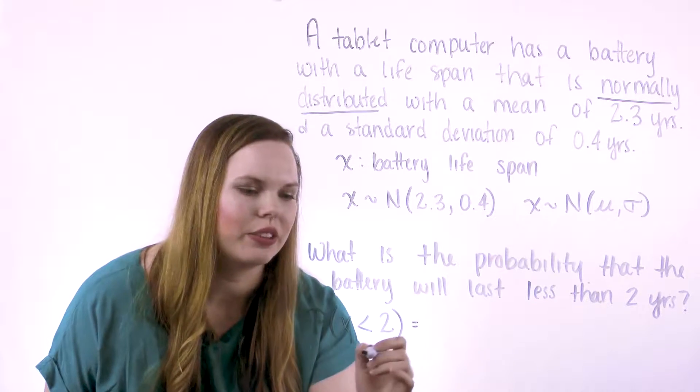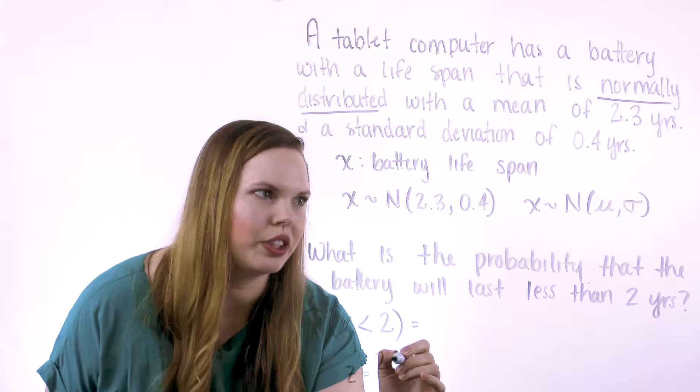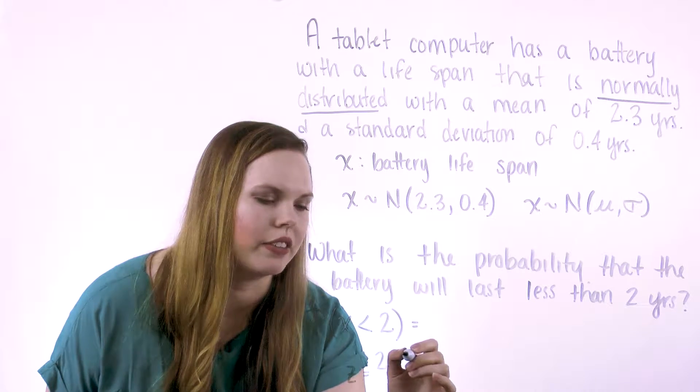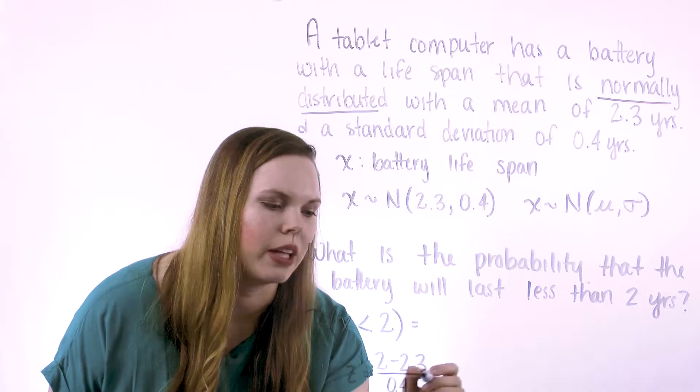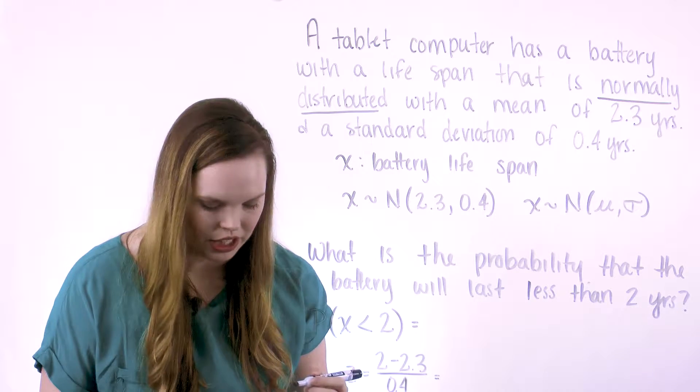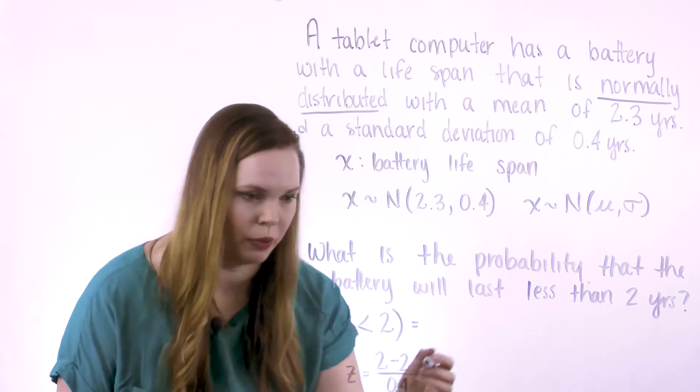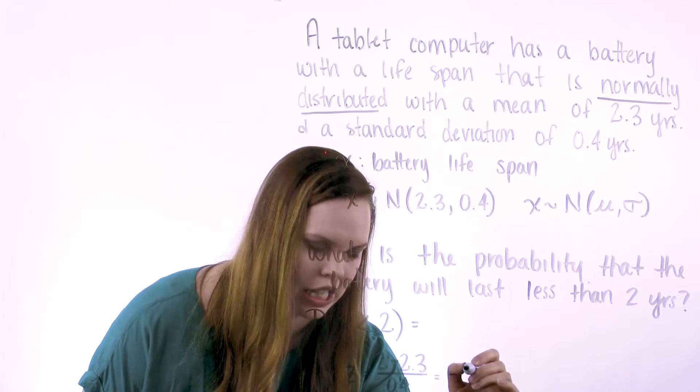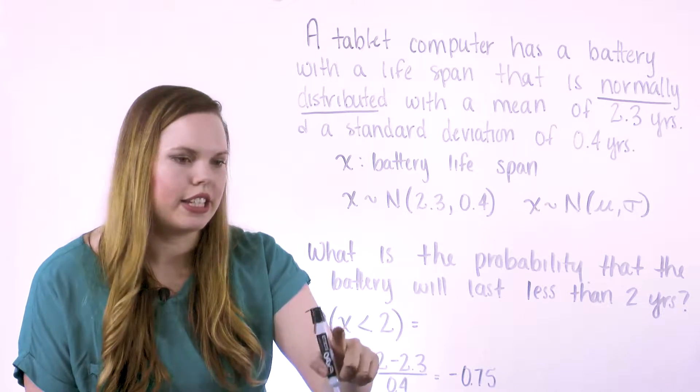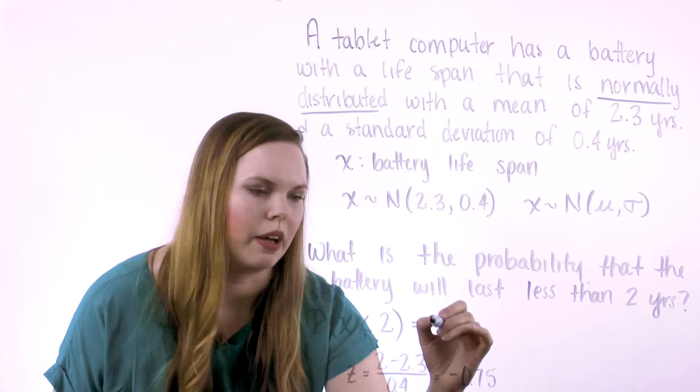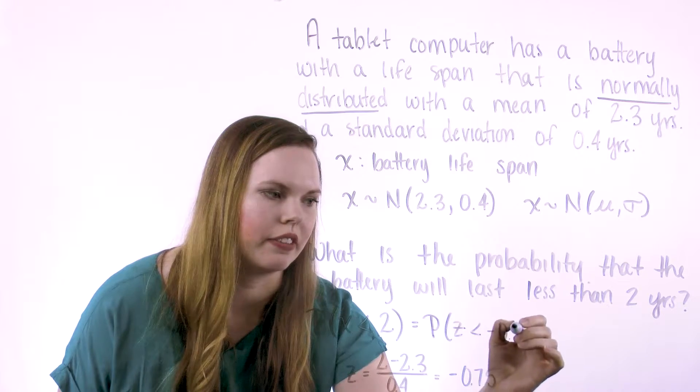Same procedure. We're going to find the z-score of 2 using that same formula that I just went over. So we'll take our x of 2, subtract the mean of 2.3, and divide by the standard deviation of 0.4, giving me the number of standard deviations I am away from the mean. And this one is negative 0.75, because 2 is less than our mean. So standardizing this x, just like we did that last problem, is the same as asking the probability that z is less than negative 0.75.